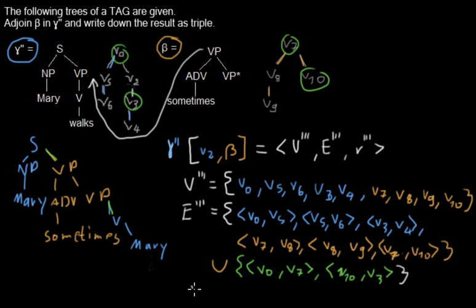And we have the root node. And the new root node of this tree will, as you can see, will be the same as in the tree we are joined into. So in this case, it's V0. And this is the junction in every detail.